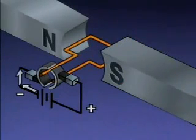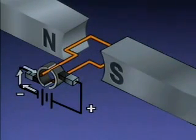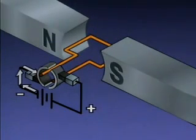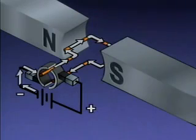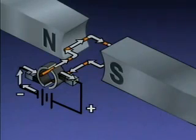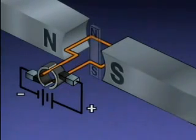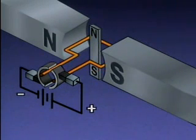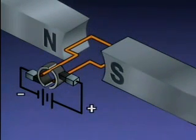During operation, the commutator makes sliding contact with the brushes. Current flows from the negative side of the DC power source through one brush to a commutator segment, then through the armature in this direction, back through the other commutator segment to the other brush, and to the positive side of the power source. The poles are perpendicular to the armature, so when current is supplied to the armature, motor action is produced.